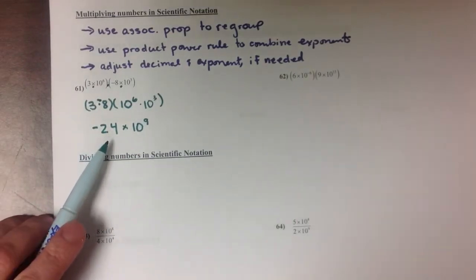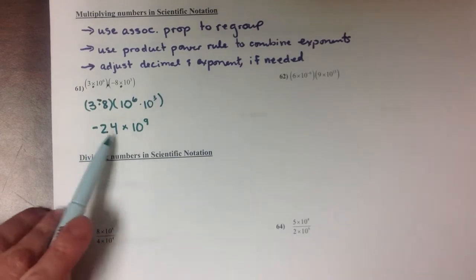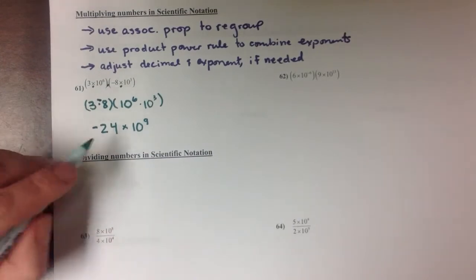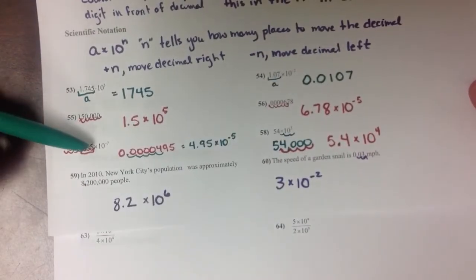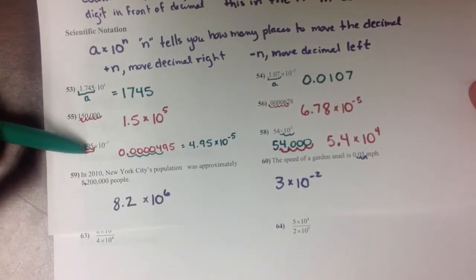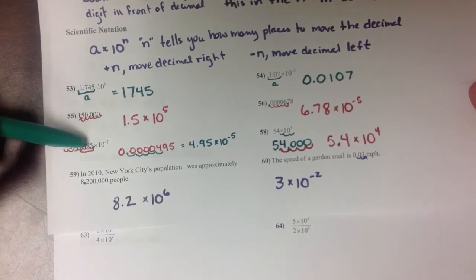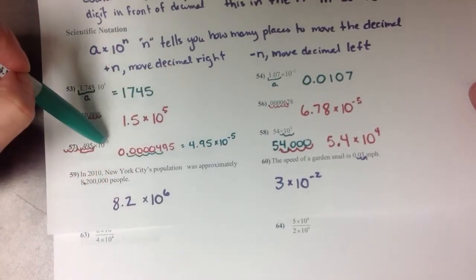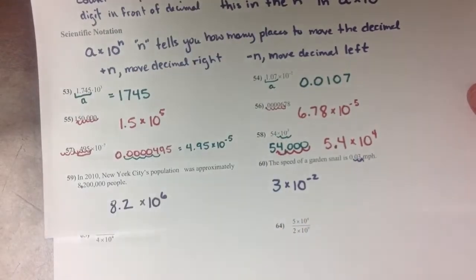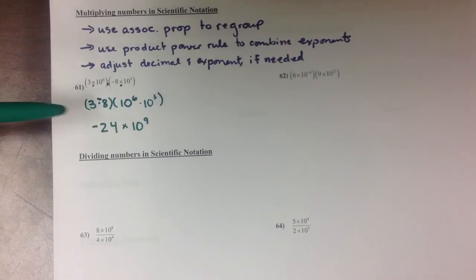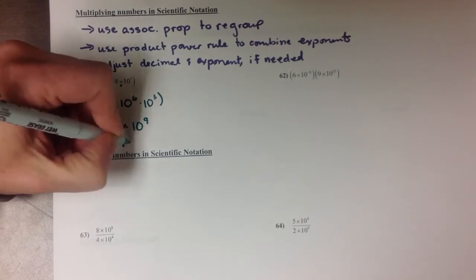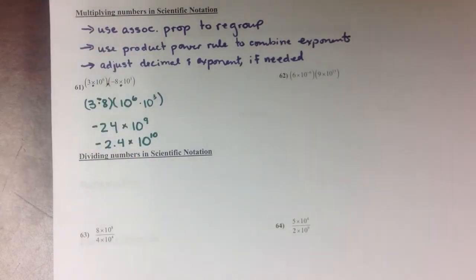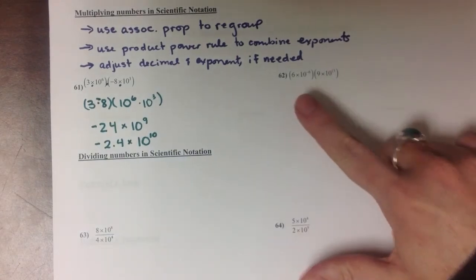But you'll notice that this number isn't quite scientific notation because we've got a 24 here instead of a 2.4. So rather than stretching it all out and putting it back together, I'm going to remember that pattern that I noticed on the last two problems that we tried like this, that when the decimal needs to be moved back to make it a 1-digit number instead of a 2 or 3-digit number, it always makes the exponent go up by the number of places that you moved it. So I'm going to change this negative 24 into a negative 2.4, and that's going to make my exponent go up to 10.